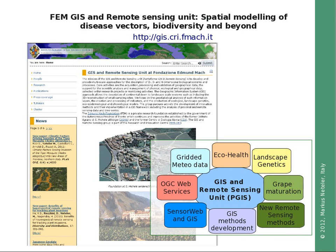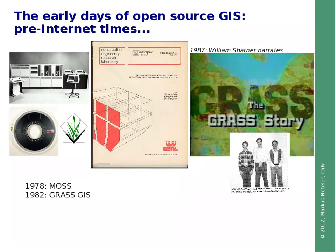Now I want to look back into the early days of Open Source GIS. It is important to know that this predates the Internet era. In those days computers were very big, and data and software exchange happened on magnetic tapes. In the early 1980s, the first Open Source GIS systems appeared: the MOS system and GRASS GIS, which has been under continuous development ever since.